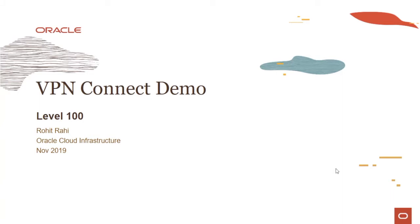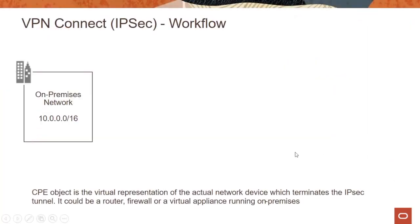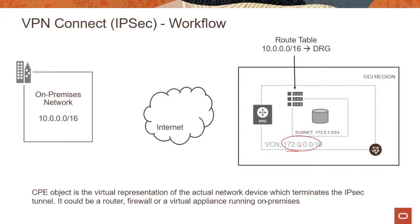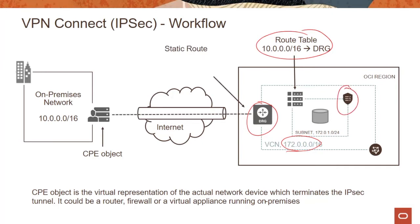Welcome to this module on a quick VPN Connect demo. As we saw in the previous module, we have an on-premises setup with an address space of 10.0.0.0/16 and an OCI setup with an address space of 172.0.0.0/16. We will create a DRG, update the route table, change some network security groups or security lists, create a static route, and set up IPSec tunnels, concluding with the tunnels in an up state.